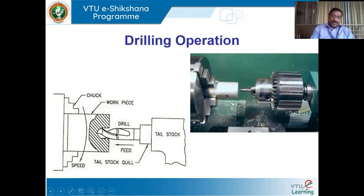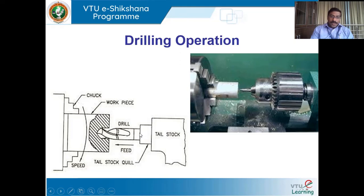By using a chuck key, we can grip the drill bit in the drill chuck. When the drill chuck is advanced and pierced through the rotating workpiece — which is held in the chuck on a lathe — you can see in the figure that we have a chuck, a workpiece, the tailstock, and the tailstock quill. Inside the tailstock quill, one can insert the drill chuck, and the drill bit of the desired diameter is held there. The job is made to rotate and the drill bit is pierced inside the job so that a hole is created.